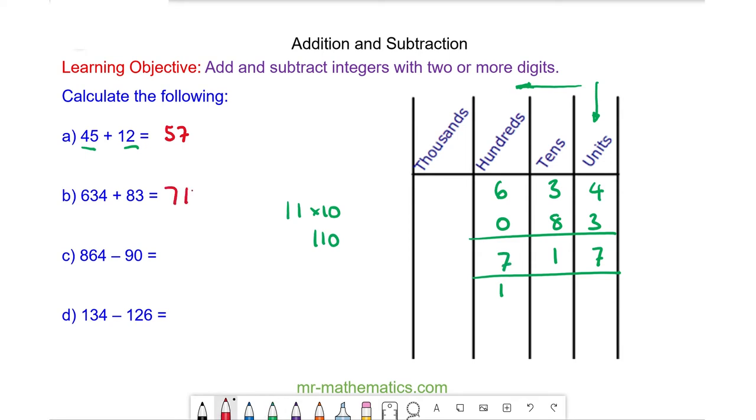Moving on to subtraction with question c: 864 minus 90. That's 8 hundreds, 6 tens, 4 units, minus 9 tens and 0 units.